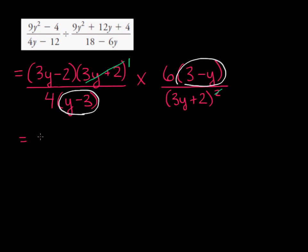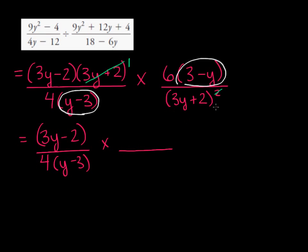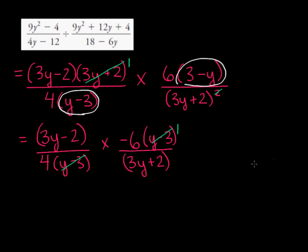Now I've got 3y minus 2 over 4 times y minus 3, times — in the denominator I'm left with one of the factors of 3y plus 2, and in the numerator I'm going to take out a factor of negative 1. So now I've got negative 6, and then in brackets I would have negative 3 plus y, which, if I reverse those two terms, is the same as y minus 3. So now I've got y minus 3 divided by y minus 3, which we know is 1, and I can simplify this further.